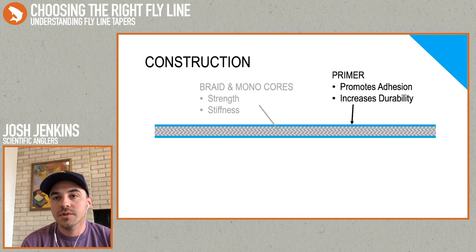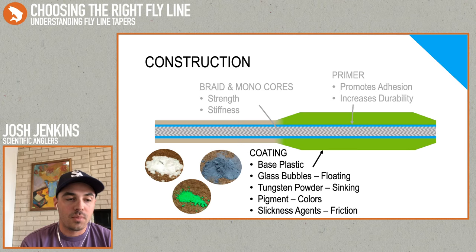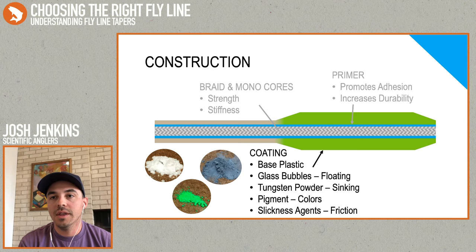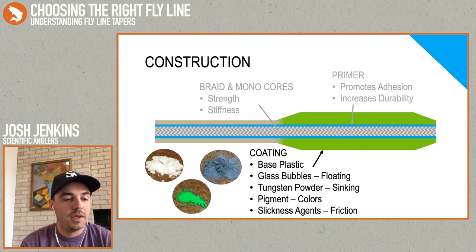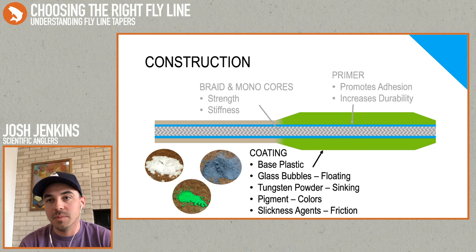Over top of that core, at Scientific Anglers we apply a primer, which is there to improve adhesion between the core and the coating. To make a truly durable line, you have to have really great stick between the coating and the core, otherwise that coating is just going to fall off. Then the third step is the coating process — we take our liquid plastic, apply it to that core, taper it, and that's how we get most of the mass of our fly line. We start with a base plastic and add different things: bubbles to make it float for a floating line, tungsten powder to make it sink, pigments for color-coding different zones, and slickness agents to reduce friction and help you cast further.